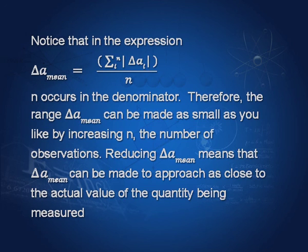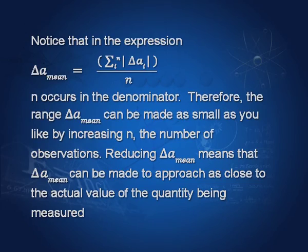For example, your teacher has told you to take 10 observations in the simple pendulum experiment, but if time allows, I would suggest taking 20 or 30 observations. As the number of observations increases, the range within which the actual value of G lies decreases — meaning you are approaching more and more the real value of G. So increasing the number of observations reduces the error in any experiment.